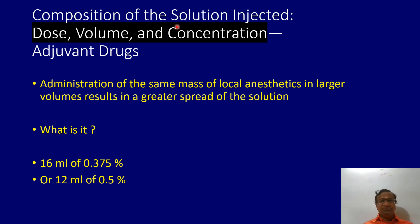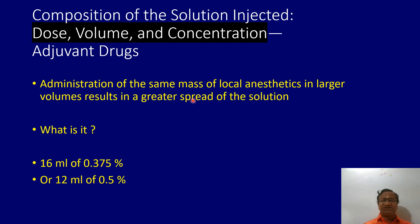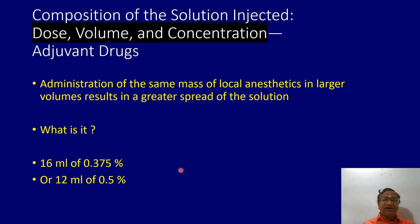Dose, volume, and concentration: administration of the same drug mass in larger volumes increases spread. For example, 12 ml of 0.5% solution gives 5 mg/ml × 12 = 60 mg — that is the mass. But if you give the same 60 mg dose in 16 ml of 0.375% solution, the spread is probably more. This is what is important about the volume-concentration relationship.